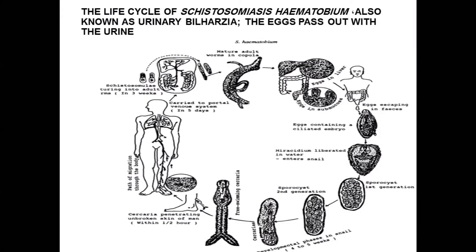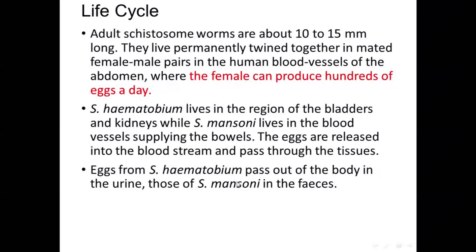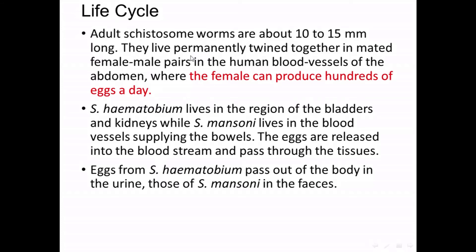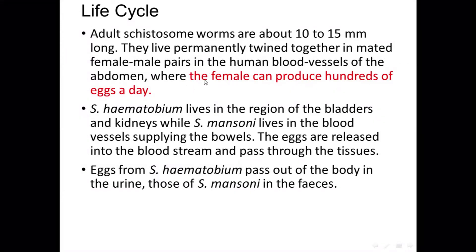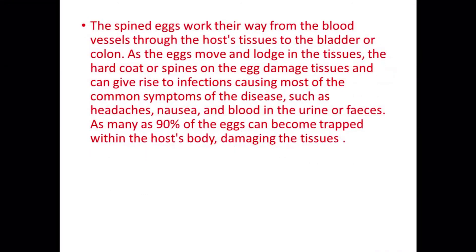هاي نفس الشي — life cycle of Schistosoma haematobium، also known as urinary schistosomiasis — the eggs pass out with the urine. نفس المراحل اللي شرحنا قبل. The female can produce hundreds of eggs a day. كلنا بنعرف من شكل الـ eggs — بالنسبة لـ mansoni بنسبة لـ haematobium عندهم spine. The spined eggs work their way from the blood vessels through the host tissue.